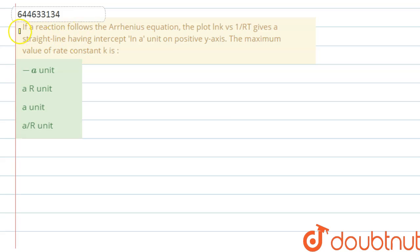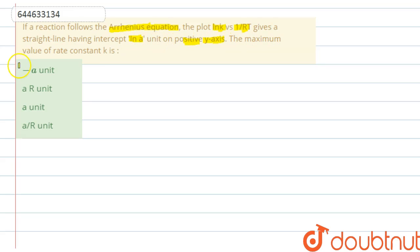Hello guys, in this question it is saying that if a reaction follows the Arrhenius equation, the plot of lnk versus 1/RT gives a straight line having intercept lnA on the positive y-axis, and we have to find out the maximum value of rate constant k. We have four options: minus A, A, A into R, and A by R.